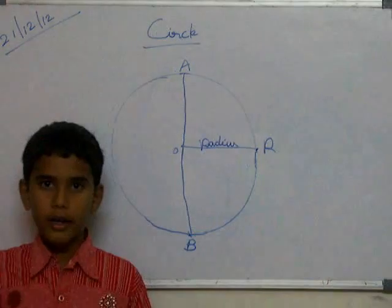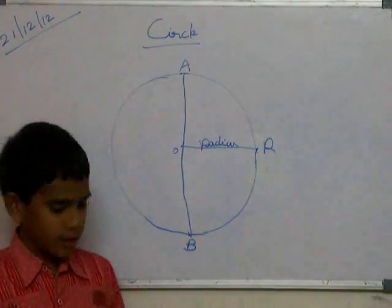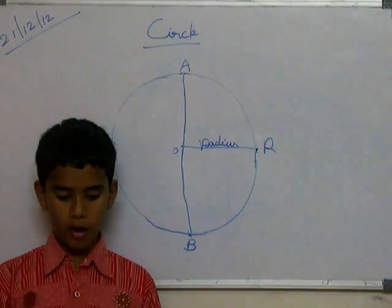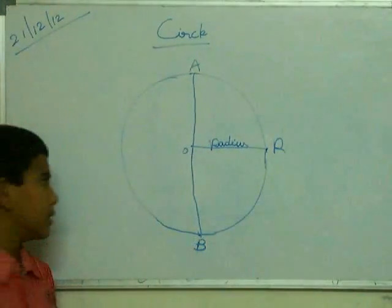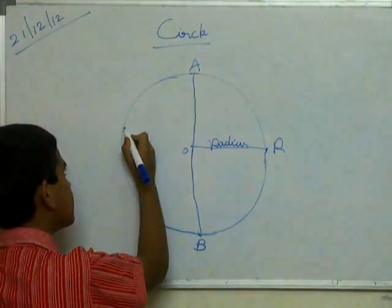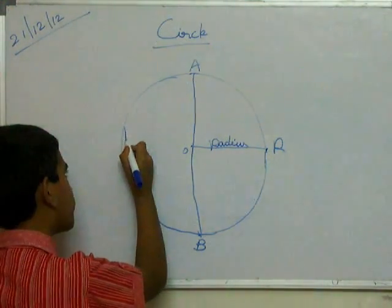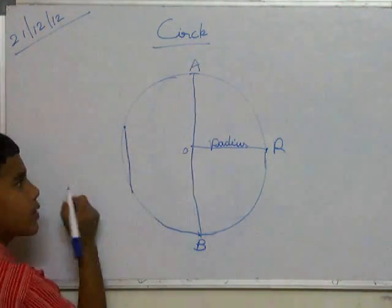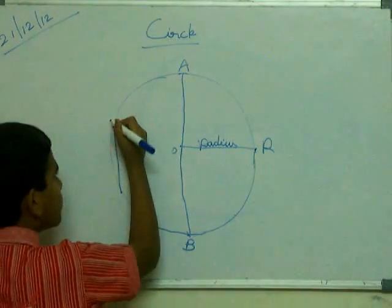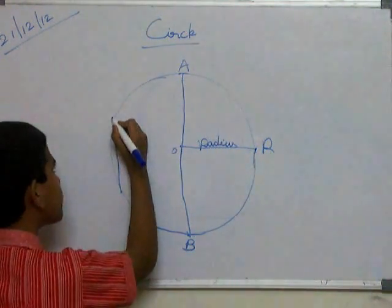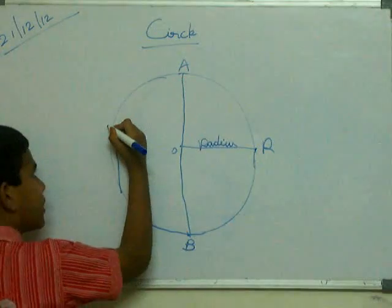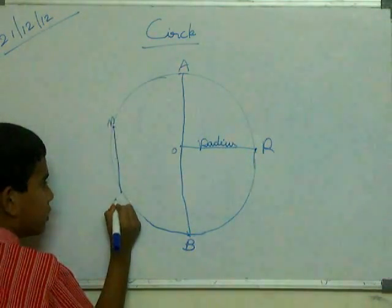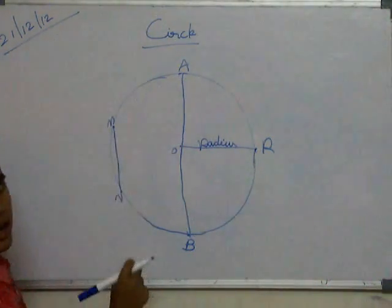Now chord. Chord of a circle is the line segment joining any two points on the circle. Like this — this is the starting point of the chord and this is the ending point. We should put here M and N. This is a chord.